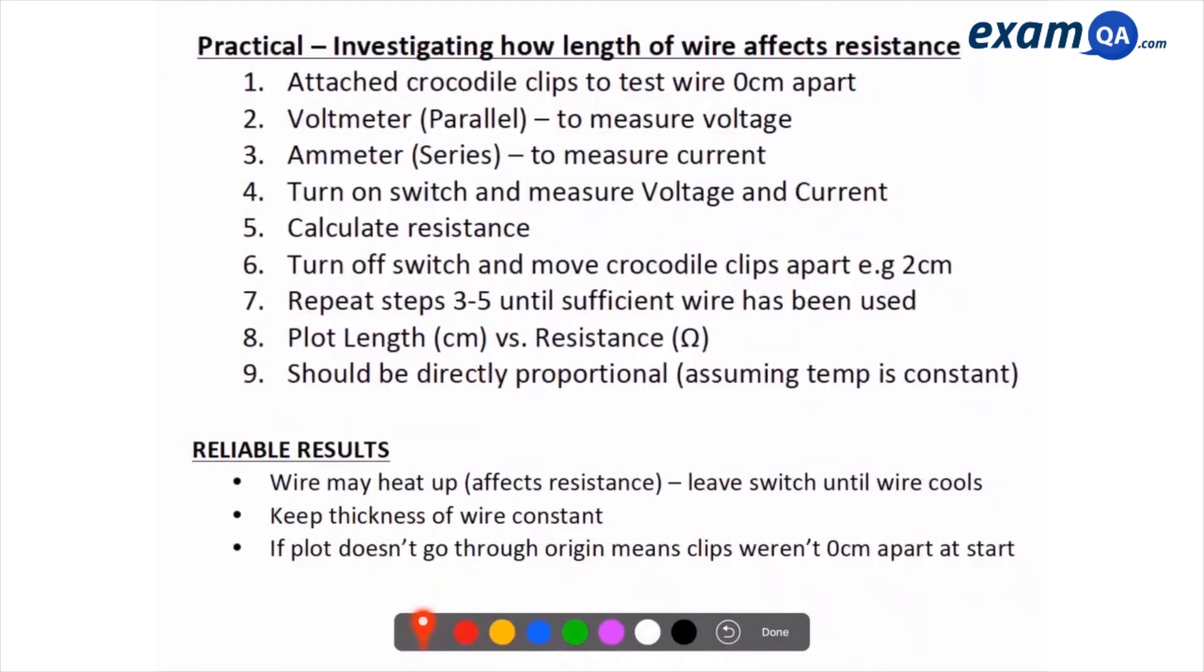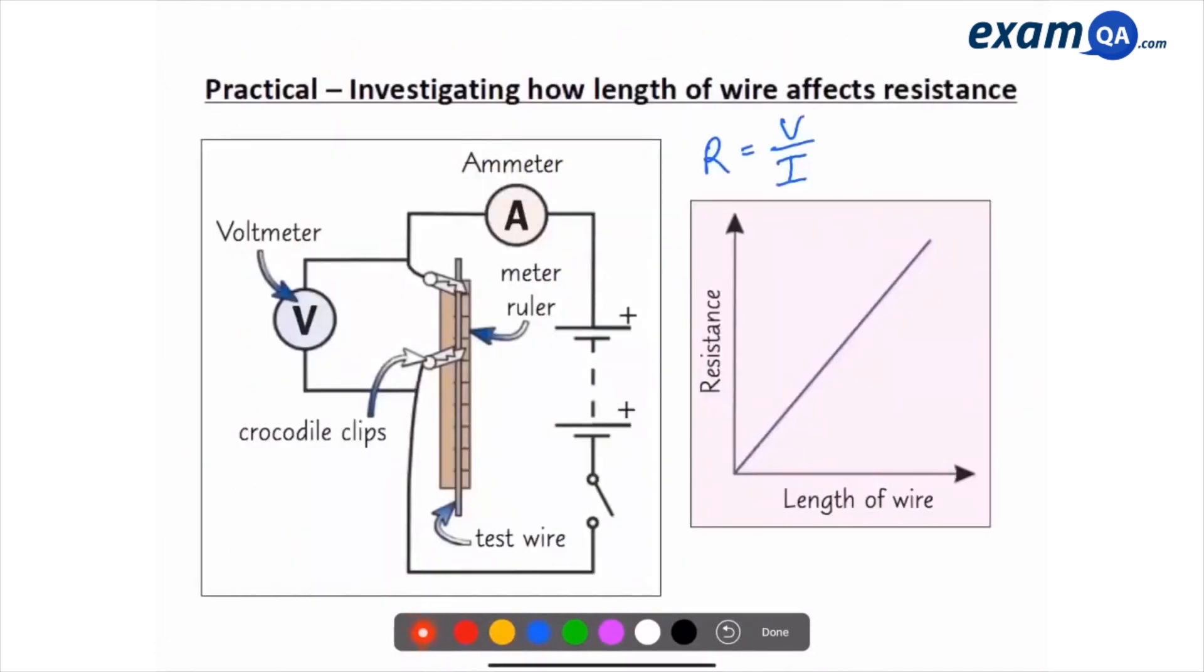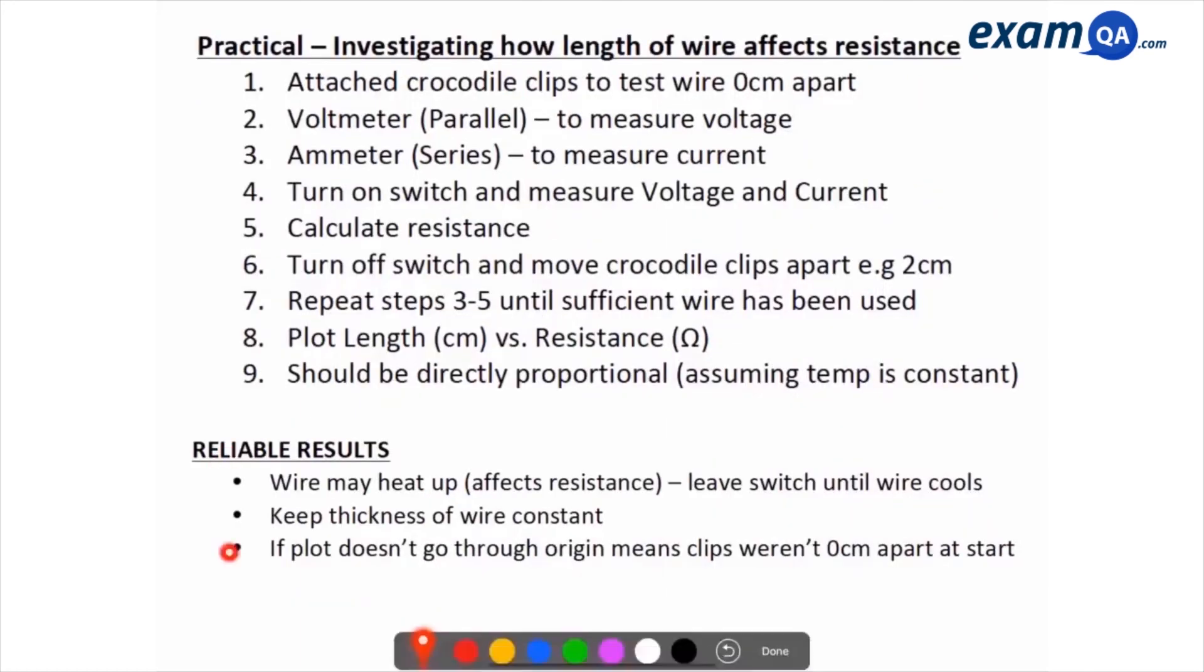And if they ask you, explain why, let's say your graph looks like this. So it doesn't go through zero like this one does over here. The reason could be that initially your two crocodile clips were not exactly zero centimeters apart. Even if they were like a millimeter or two millimeters apart, your data will not be straight like that. So these are some potential questions they could ask you.